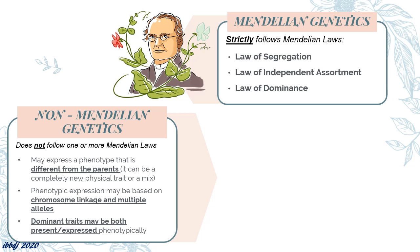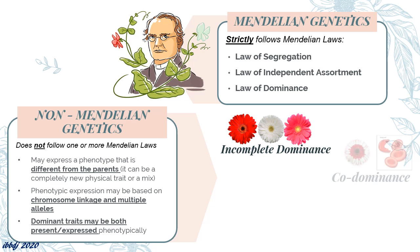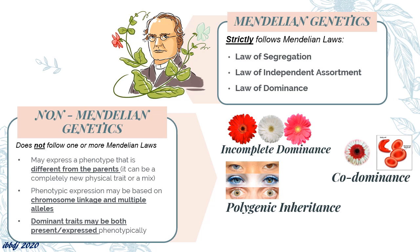Unique phenotypic expression in offsprings is largely due to chromosome linkage and multiple alleles responsible for a single phenotype. Dominance in this inheritance may not necessarily mask the expression of a recessive allele. Non-Mendelian inheritance patterns include incomplete dominance, codominance, polygenic inheritance, and linked alleles.